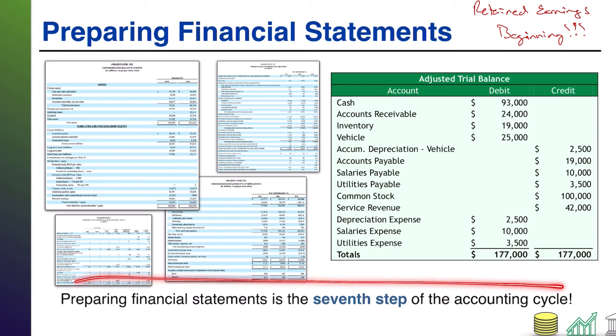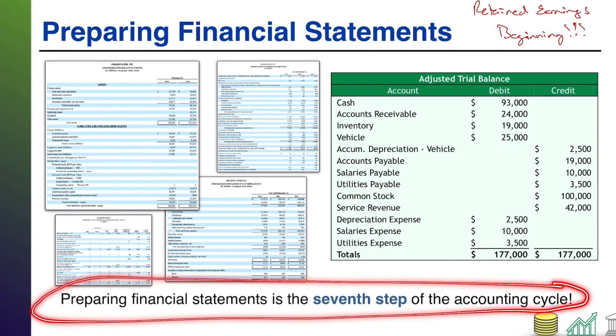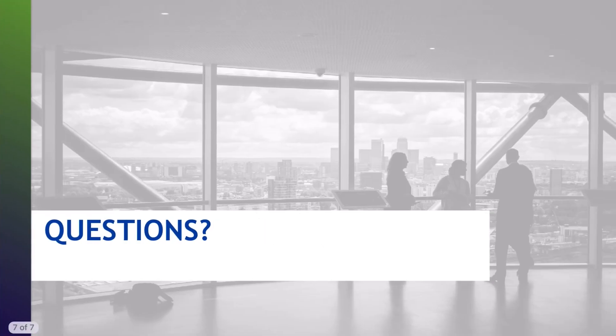Preparing the financial statements is going to be the seventh step of the accounting cycle. That is it for the adjusted trial balance. We are seven of nine steps through the accounting cycle at this point — adjusted trial balance was step six, you take all those numbers and dump them into your financials for step seven. We still have a couple of steps to go: the closing journal entries and then the final trial balance, the post-closing trial balance, which I will cover in other videos. I hope you found this helpful and I hope you have a great day.